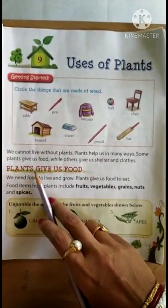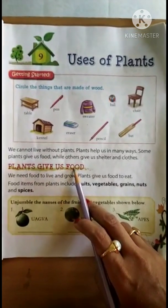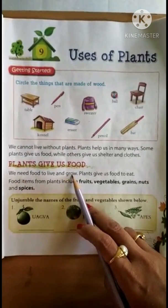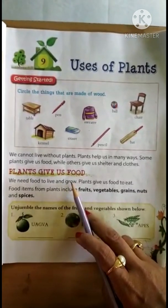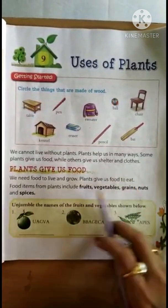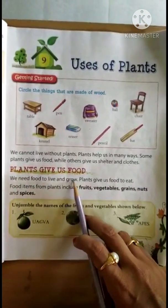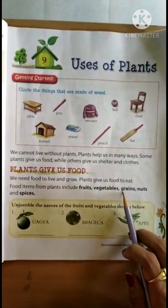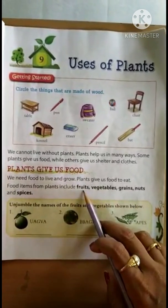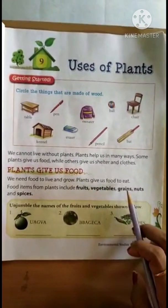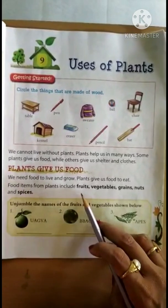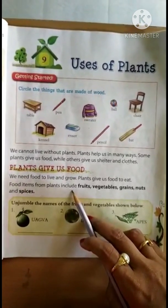Next topic: Plants Give Us Food. We need food to live and grow. Without food we cannot survive. Plants give us food to eat. Food items from plants include fruits, vegetables, grains, nuts, and spices. Fruits, vegetables, grains, nuts, and the spices used in cooking - all of these we get from plants.